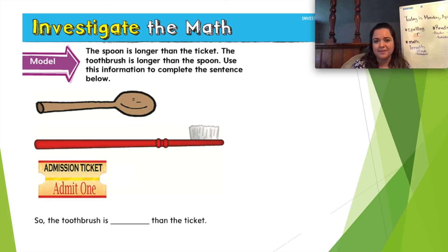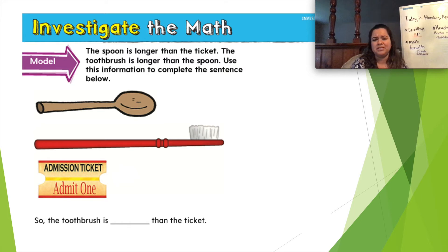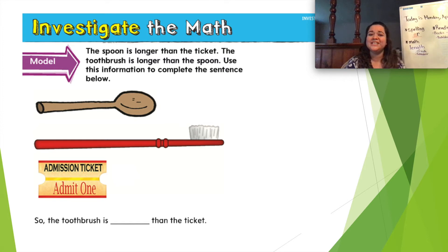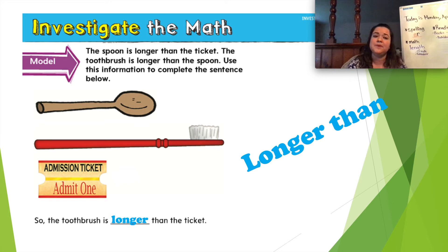The spoon is longer than the ticket. The toothbrush is longer than the spoon. Let's stop and think: if we know the spoon is longer than the ticket, and the toothbrush is longer than the spoon, then what do we know about the toothbrush compared to the ticket? Would we say the toothbrush is shorter than the ticket? No. The toothbrush is longer than the ticket. So those are the two main words we'll use today to compare length: 'shorter than' or 'longer than.'